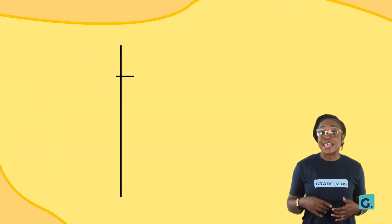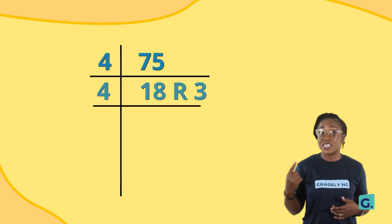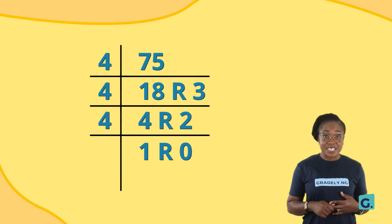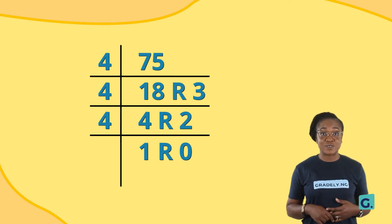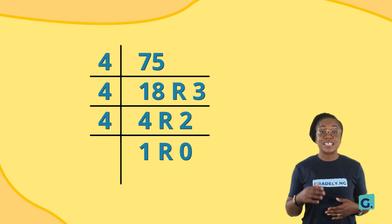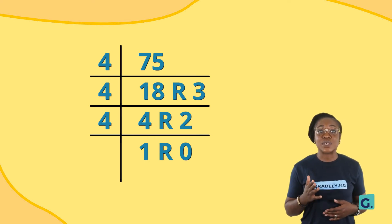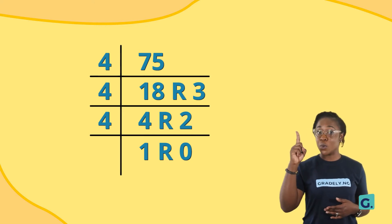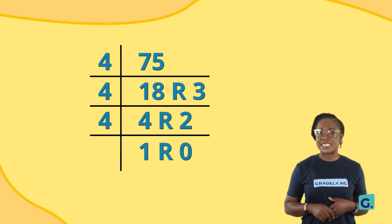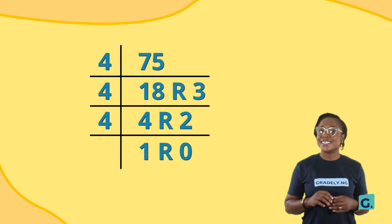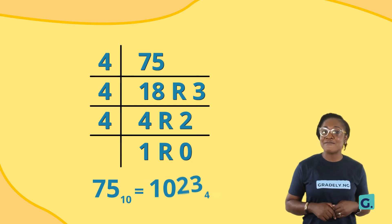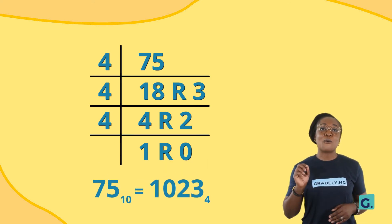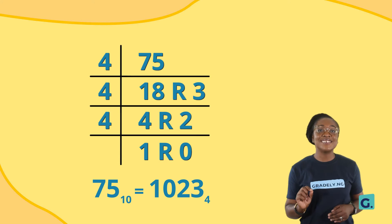R in the image stands for remainder. When you are presenting your answer as a collection of digits, start with the downward remainder to the upward remainder. Now, we can say that 75 base 10 equals 1,023 base 4.